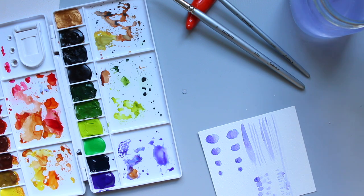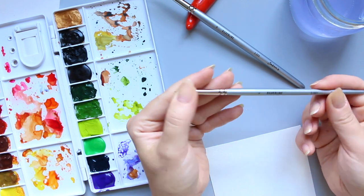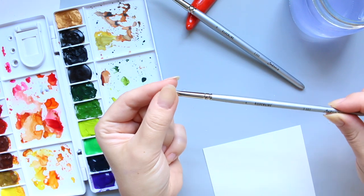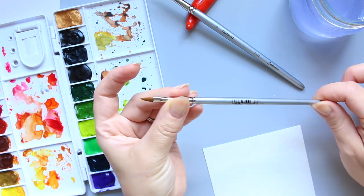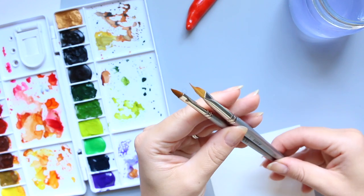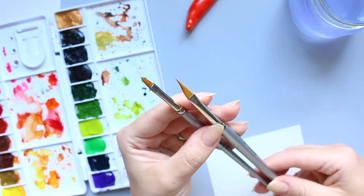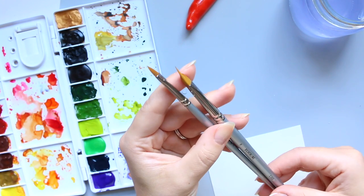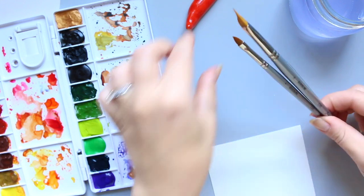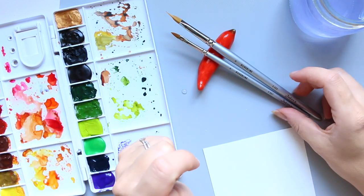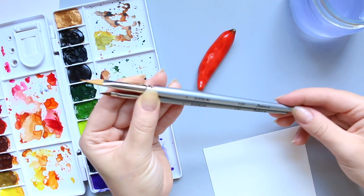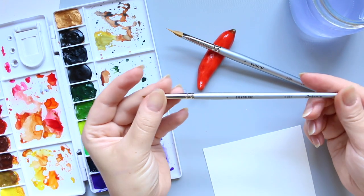Okay, so moving on to the next one. Let's look at the silver line brushes and I've got two here. So these are the Toray hair. So Toray hair is supposed to be the best quality synthetic fiber that's currently available. And so they're quite sort of premium in their quality and they hold a beautiful shape.